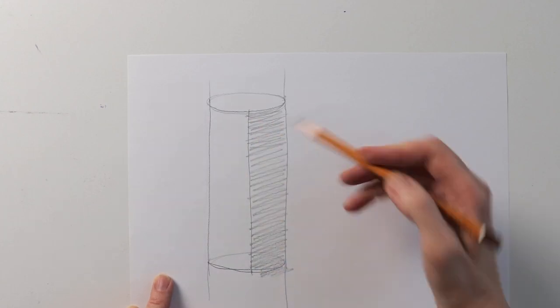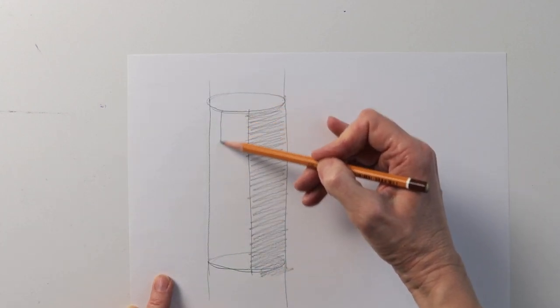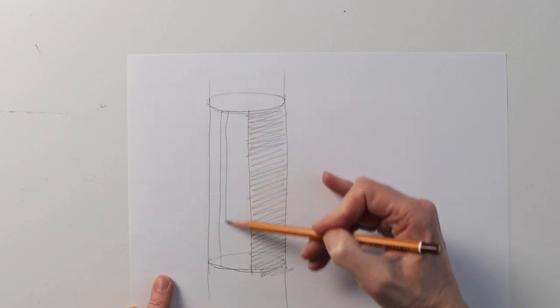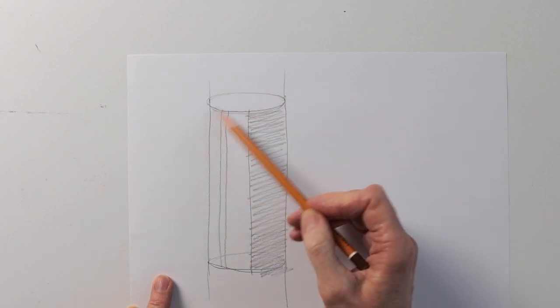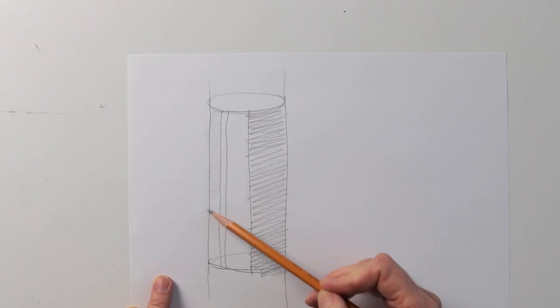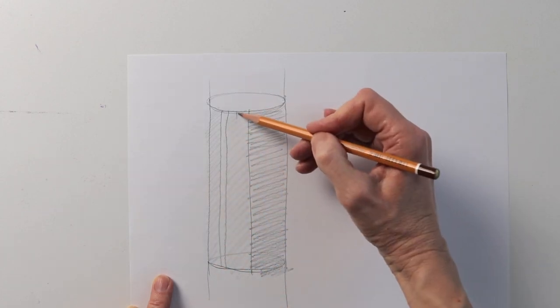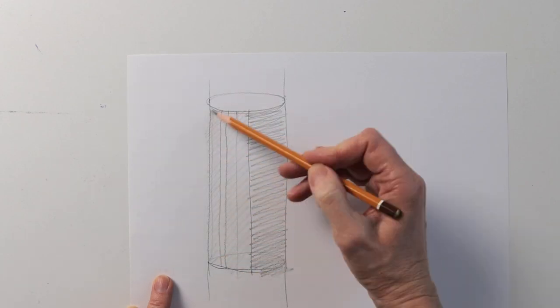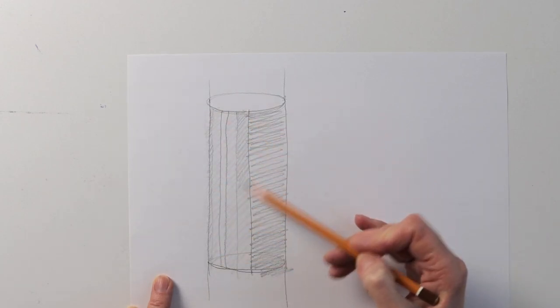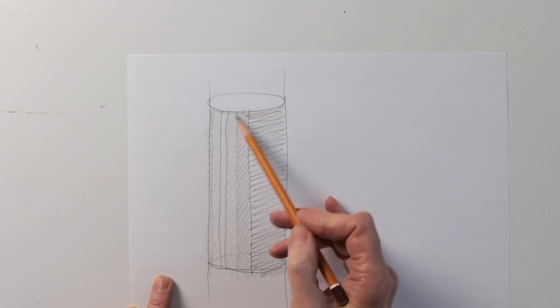Now let's take apart the lighted part. The lightest spot is the highlight. Then you have the halftone, which is a little bit darker than the highlight. And then there is the tone, which is darker than the halftone.